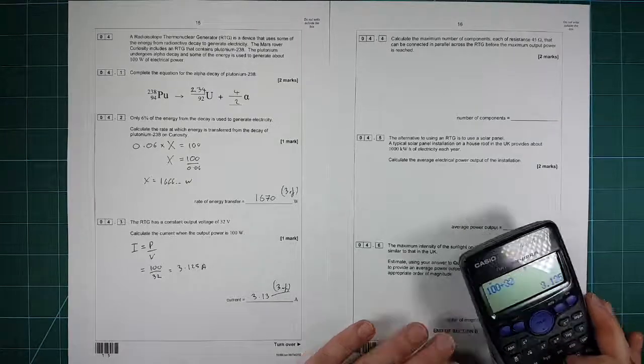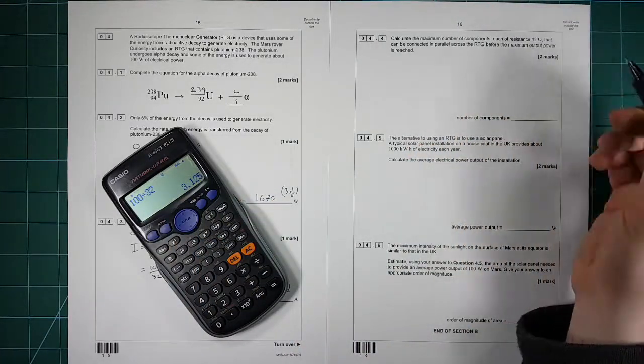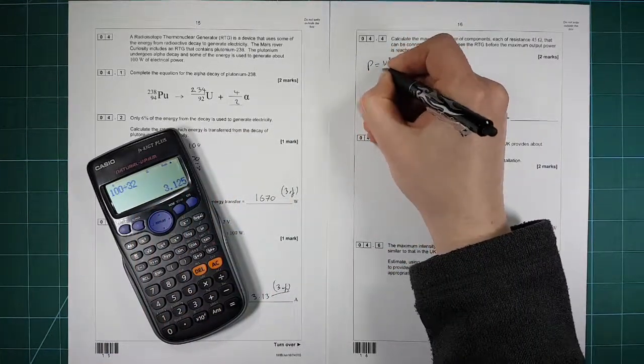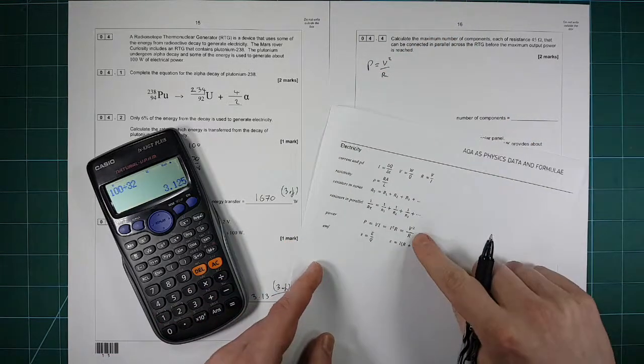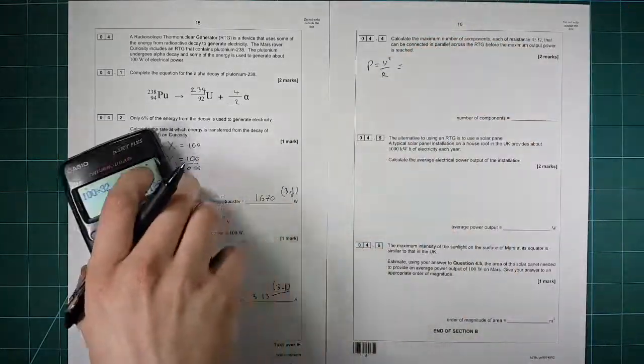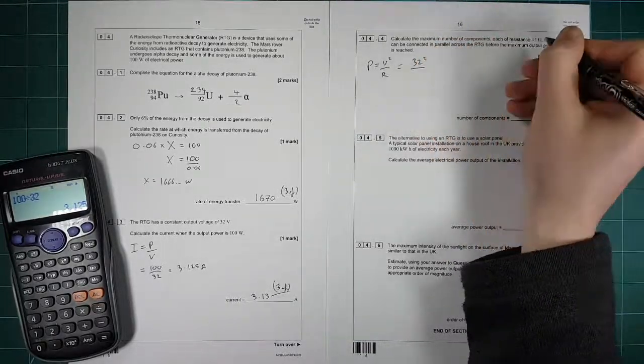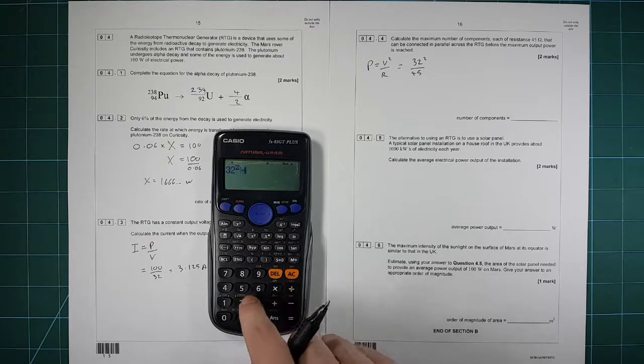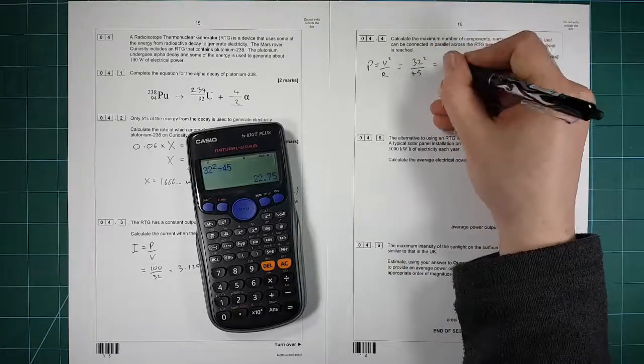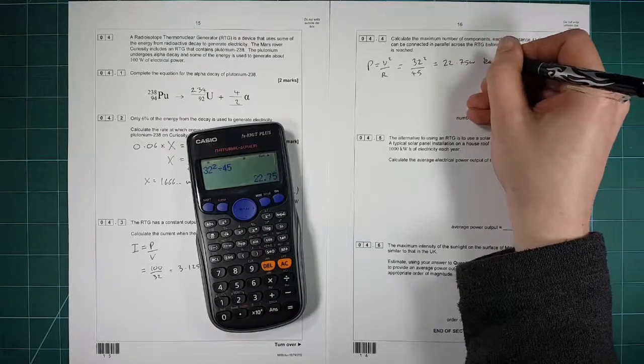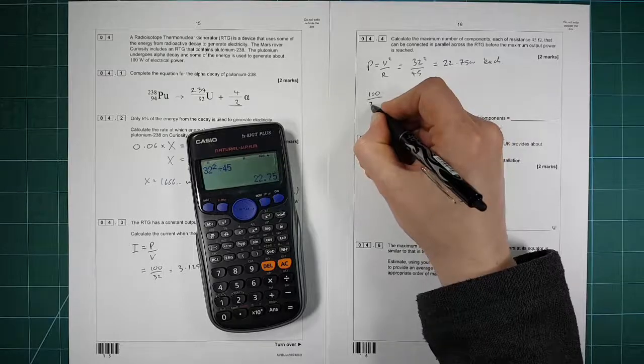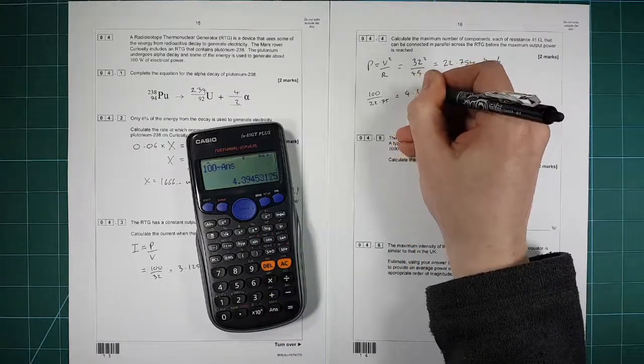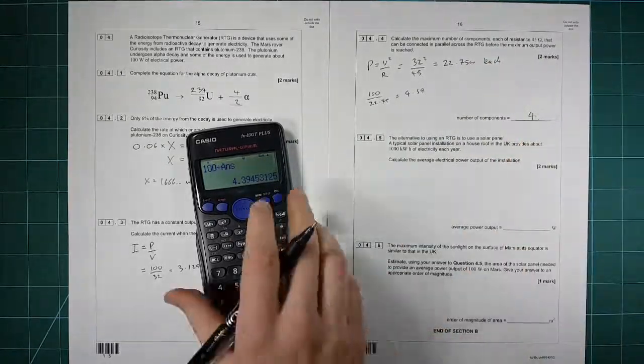Calculate the maximum number of components, each of resistance 45 ohms, that can be connected. So we can do this in multiple ways. We can work out how much current each one we need and divide it into that, or we can work out the power. I'm going to do it with the power. So P is equal to V squared over R for each component. That's that rearrangement of your power equation. So that's going to equal V was 32, so 32 squared divided by R is 45 ohms, which gives you a power consumption of each component as 22.75 watts each. So we've got 100 watts in total, and we've got 22.75, which gives us an answer of 4.39. But of course, we need to put the whole number in there, so it's got to be four components.